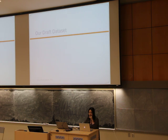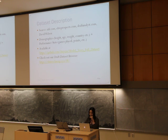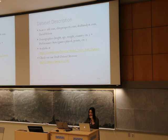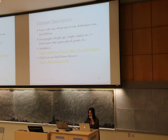Now we are going to introduce our dataset. Our dataset is mainly from NHL.com and Elite Prospects. We got the rankings from the Central Scouting Service from draftanalyst.com. Our inputs are composed of demographic metrics such as height, age, weight, etc., and performance statistics such as games played. Our datasets are publicly available in our GitHub repository, both the pre-processed and original datasets. We also developed a browser to show our datasets.